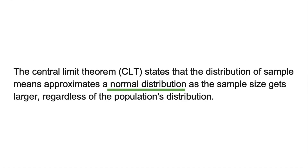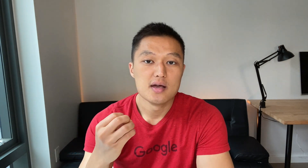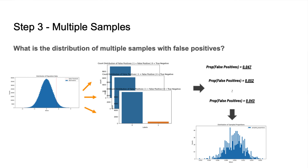Why does the distribution of sample proportions become normal? Because of the Central Limit Theorem. The CLT states that the distribution of sample means approximates a normal distribution as sample size gets larger, regardless of the population's distribution. Even if the population is exponential or bimodal, the distribution of sample proportions of false positives will ultimately approximate a normal distribution.